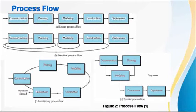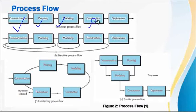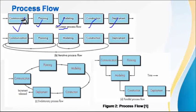There are four types of process flow. The first is linear process flow. In this, communication is followed by planning, then modeling, then construction, and finally deployment. As the name suggests, it is linear — each activity is followed by the next once the previous one is completed, and there is no way of going back to a previously completed activity. The sequence is fixed with no back path available.